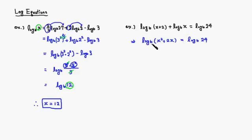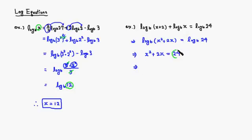Since we have the same log with the same base on both sides, the insides must match, so x squared plus 2x equals 24. I want everything on one side, so I subtract 24 from both sides, giving x squared plus 2x minus 24 equals 0.